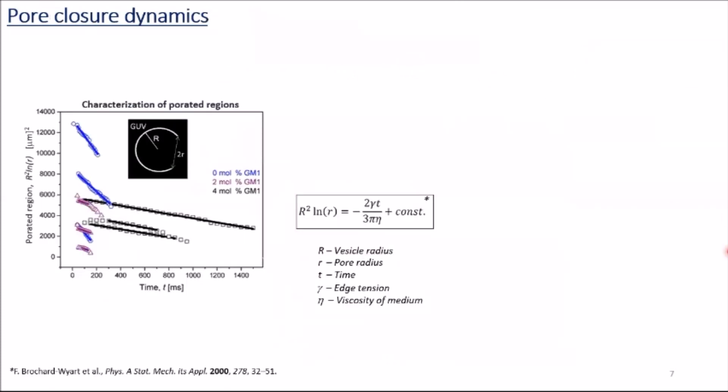Next step was to monitor pore closure dynamics and generate statistics. Here is a representative graph for pore closure dynamics. This term is associated with the poreated region and shows linearity with time. The prefactor contains information about edge tension. In this plot, each dataset represents a single GUV and each square is a screenshot taken during the poration. Blue, purple, and black correspond to zero, two, four mole percent GM1 fractions. The graph shows that pore dynamics change as a function of GM1 fractions.